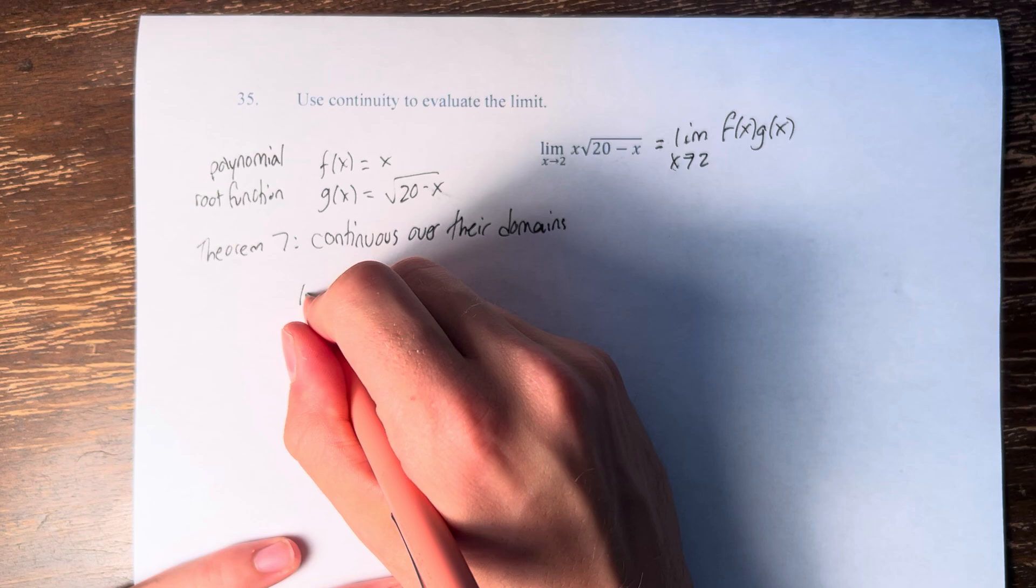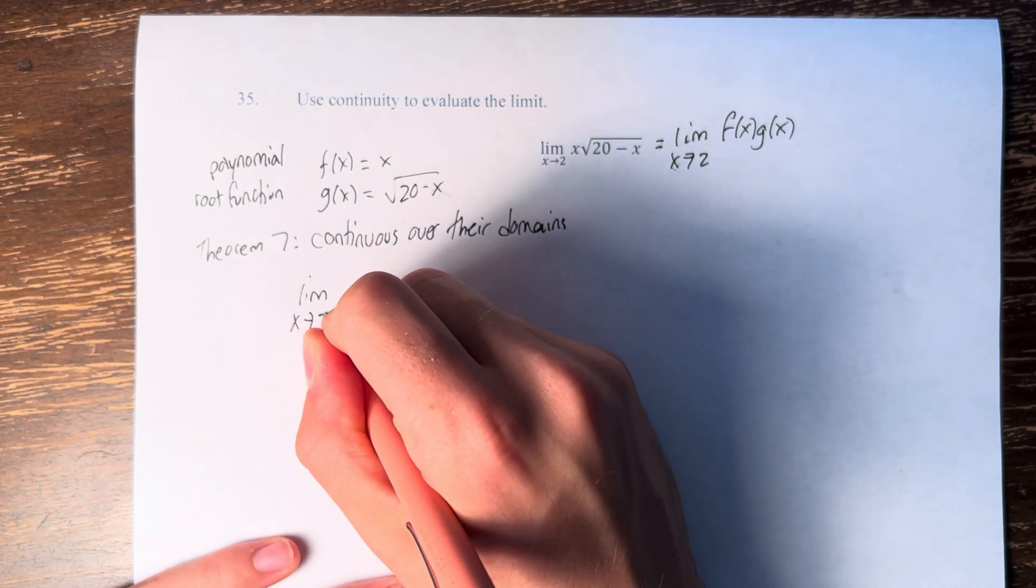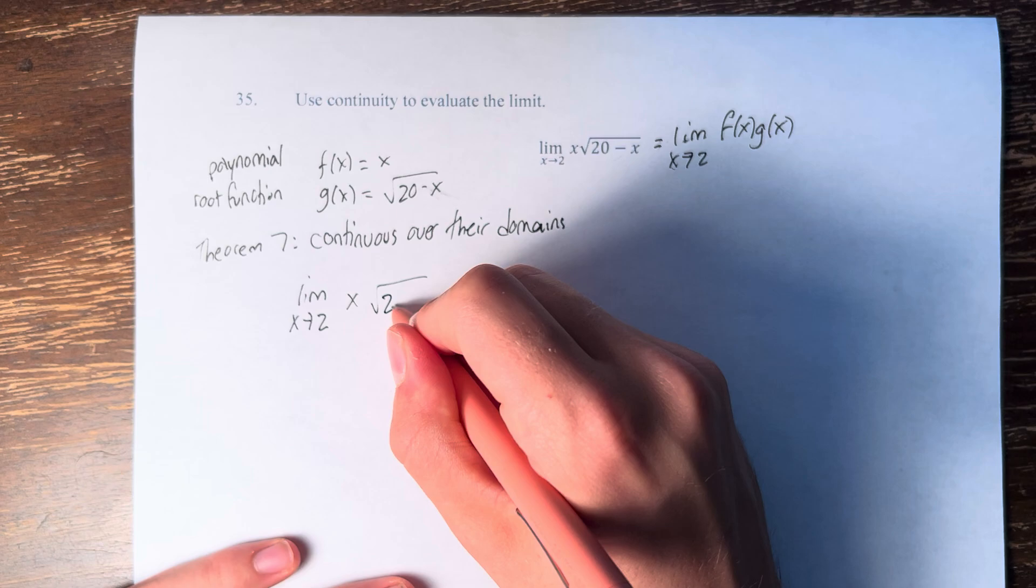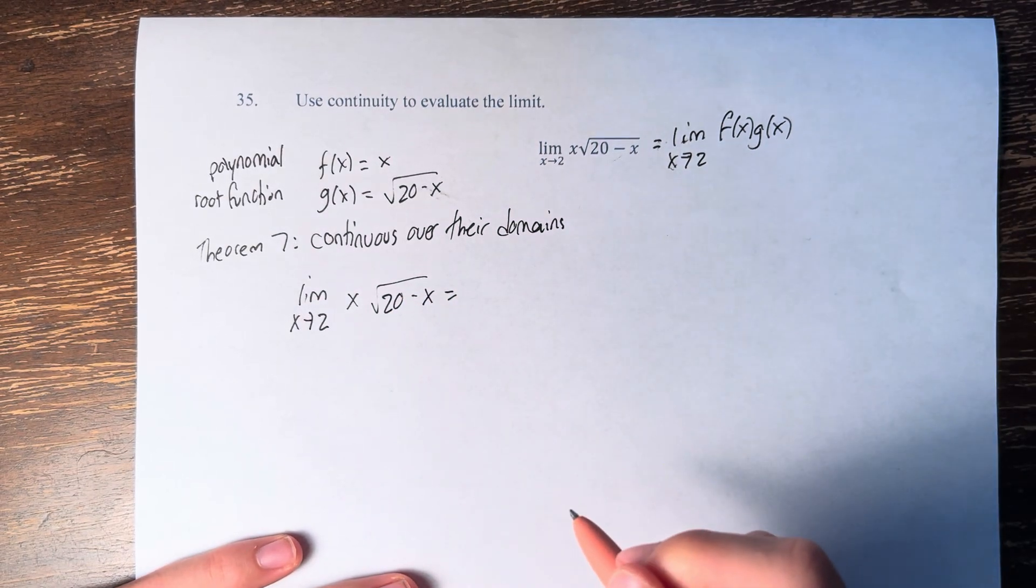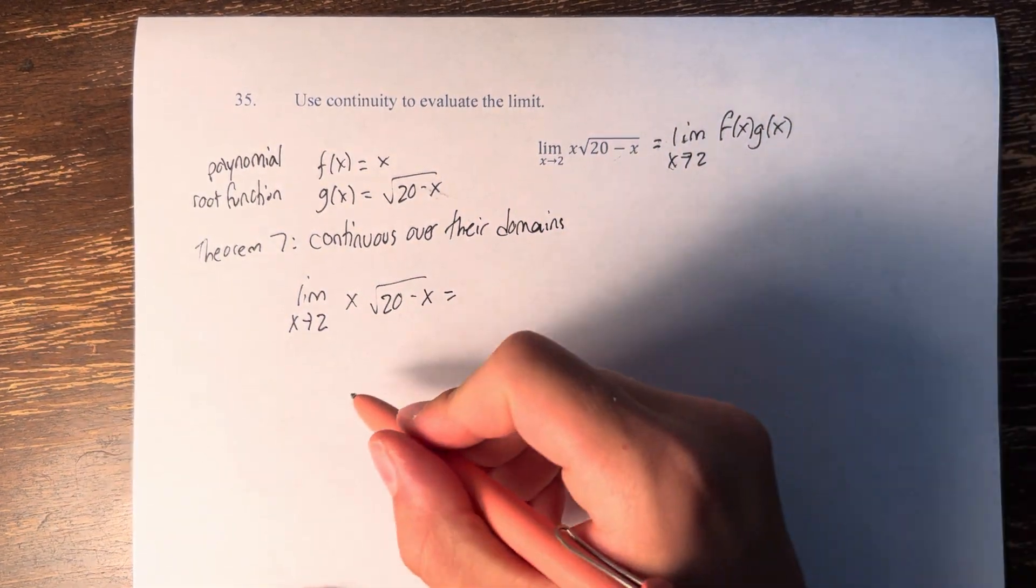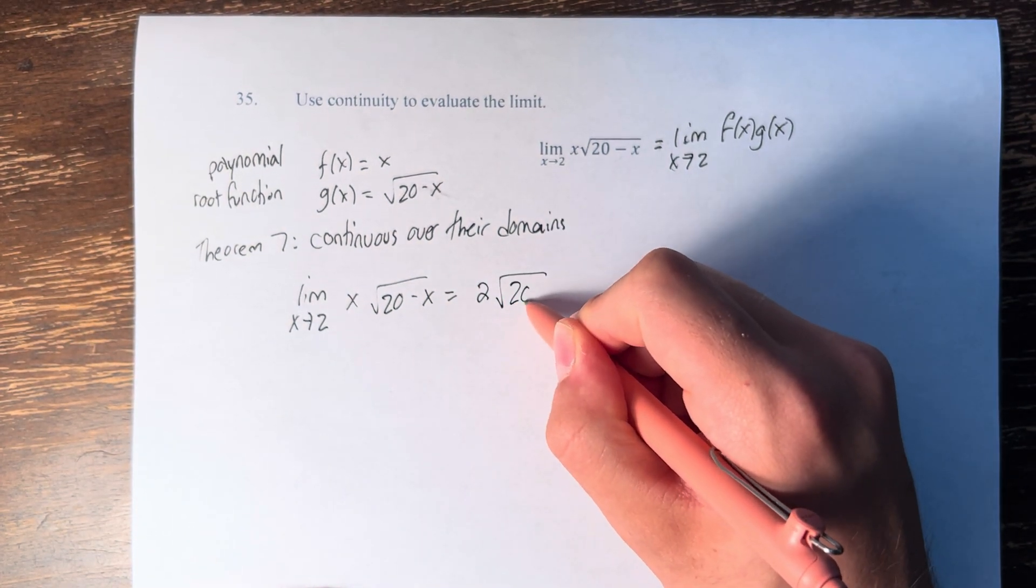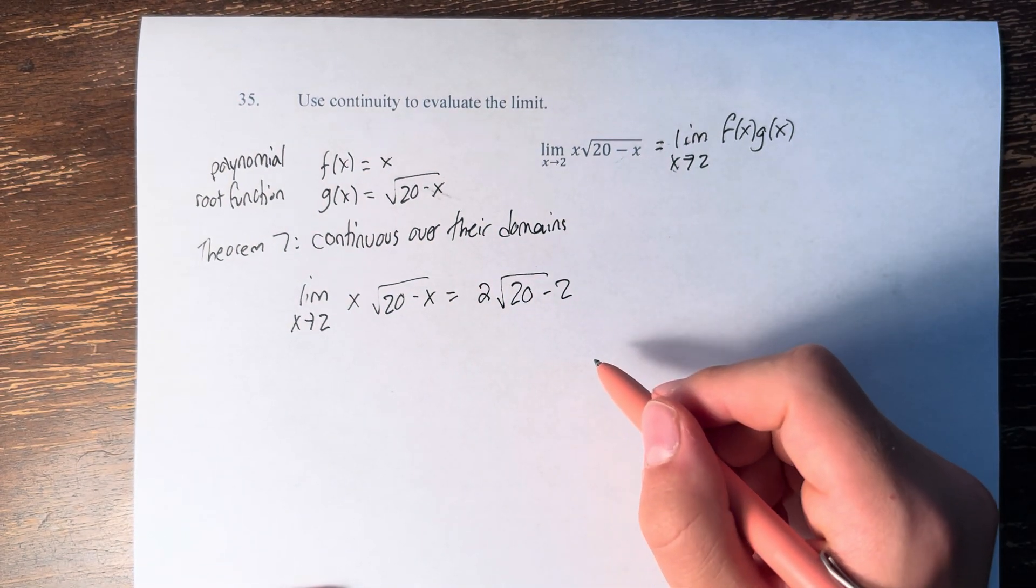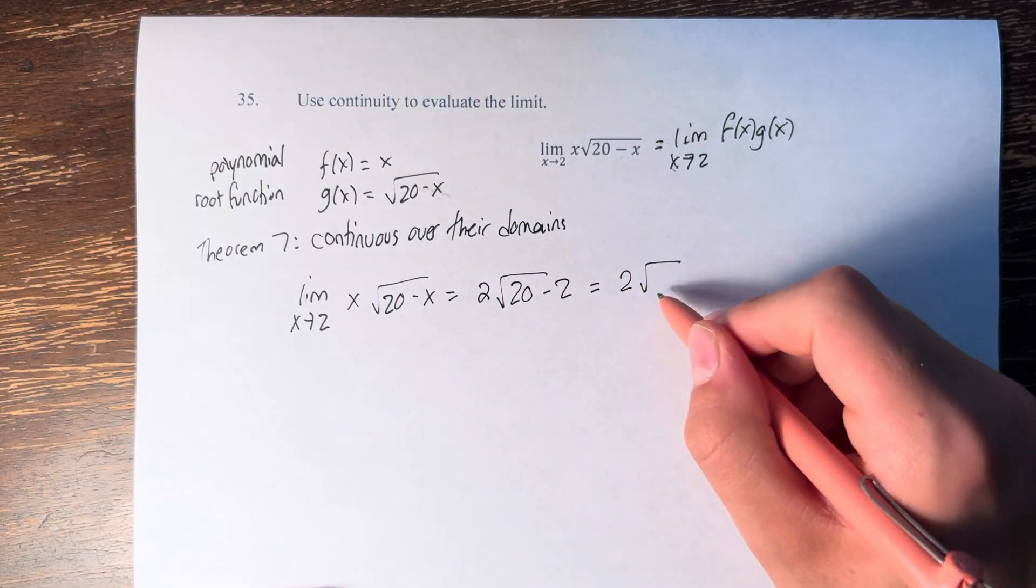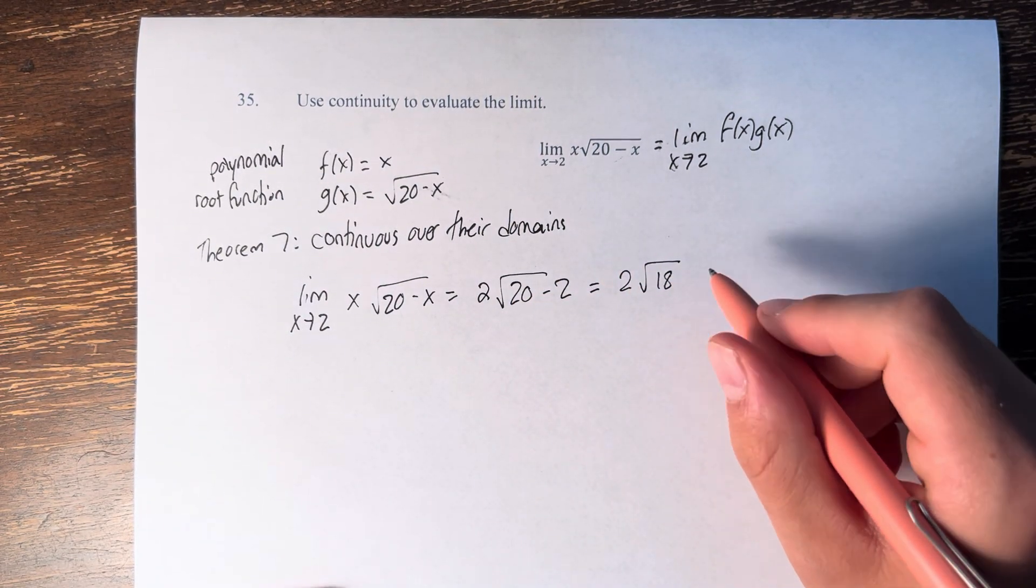And therefore, the limit as x approaches 2 of x times the square root of 20 minus x is equal to the function at 2, plugging into the function. We can get 2 times the square root of 20 minus 2, which is 18.